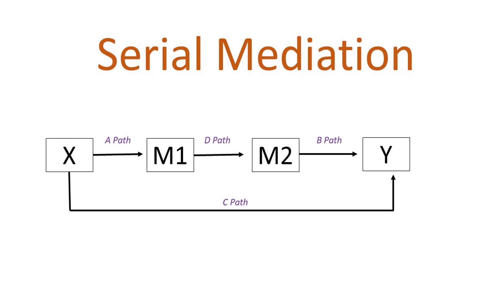With serial mediation, we have multiple mediators intervening from the independent variable to the dependent variable. So with serial mediation you've got an A path and a B path, but you also have what's called a D path — D as in dog — because E is reserved for error terms and C is used for the direct effect. With two mediators, you test by multiplying the A path times the D path times the B path. With more than two mediators, you just continue multiplying through the mediators to the dependent variable.